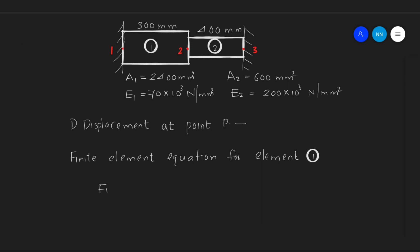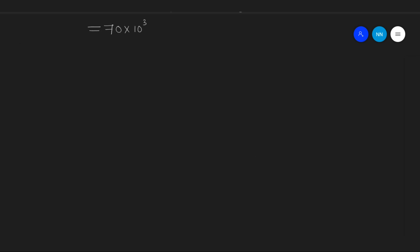The force matrix [F1, F2] equals the stiffness matrix of element 1: (E1·A1/L1) × [1, -1; -1, 1], multiplied by the displacement matrix [U1, U2]. Element 1 consists of nodes 1 and 2, which is why the force and displacement values are labeled 1 and 2. Substituting the values: Young's modulus 70 × 10³, area 2400, and length 300, giving matrix [1, -1; -1, 1] and displacement matrix [U1, U2].